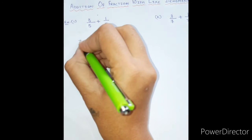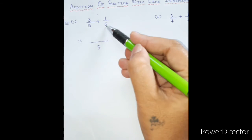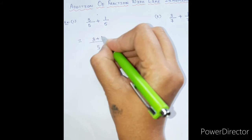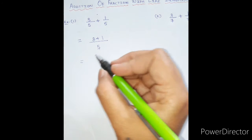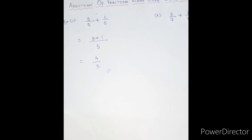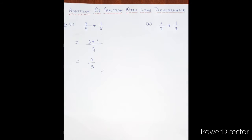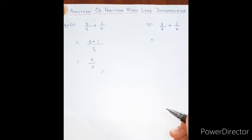We will write the fraction in this way. Since the denominator is the same, just write it one time and take the numerators: 3 plus 1. The answer is 3 plus 1 equals 4, upon 5. That's it — this is how we do addition of fractions with like denominators.